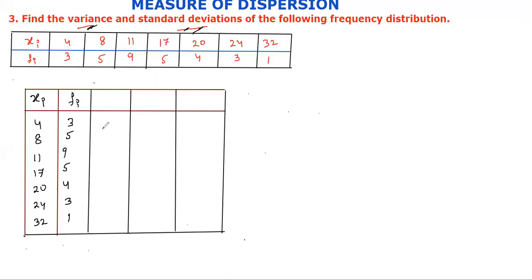I am going to talk about the mid values. The following xi values are: 4, 8, 11, 17, 20, 24, and 32.